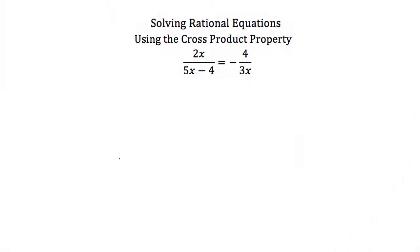The other method for solving rational equations is to use the cross product property. You can only use it when your rational expressions are set equal to each other and there is only one expression on each side of the equal sign — basically two fractions in proportion. For example, if 3 fourths equals x over 8, you can cross multiply to get 3 times 8 equals 4 times x, and solve for x.